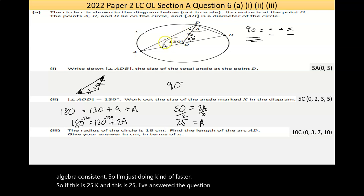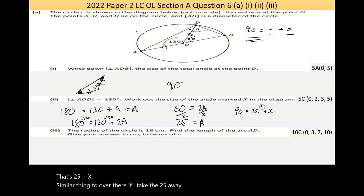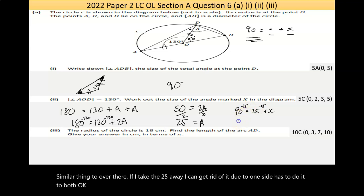Actually I haven't answered the question yet. I found that angle is 25, so to finish it off: 90 equals 25 plus x. If I take the 25 away from both sides, that's 65. So x equals 65.